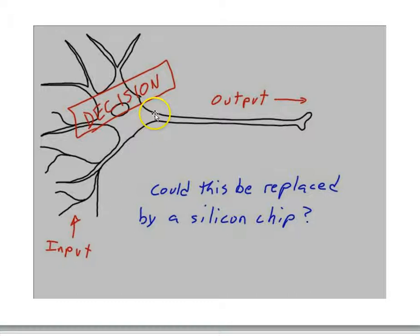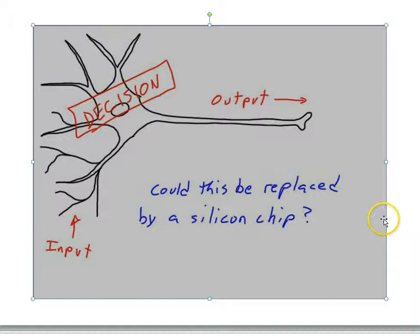It's fun to think about whether — if this is really what neurons are doing, just making these little decisions, these computations — you could replace neurons with silicon chips that had the same input-output relations and the same functional architecture as brains. Would you then have a brain that was conscious? Fun to think about.